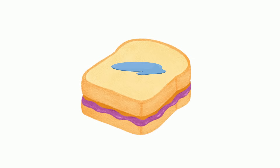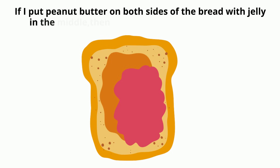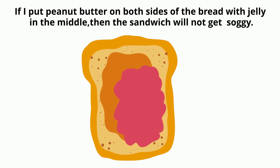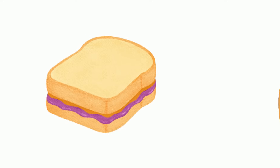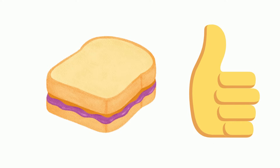After additional research, you propose a new hypothesis: if I put peanut butter on both sides of the bread with jelly in the middle, then my sandwich will not get soggy. At lunchtime, you open your sandwich and discover that your hypothesis held true. The peanut butter acted as a barrier between the jelly and the bread, which caused the sandwich to not become soggy.